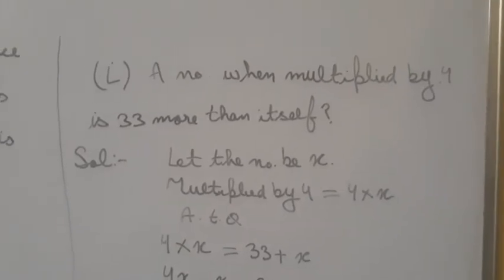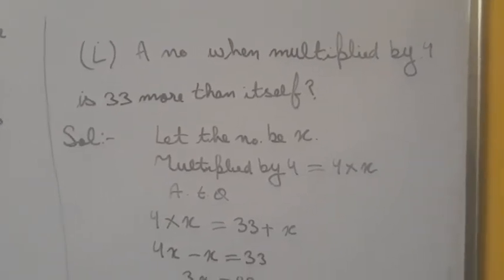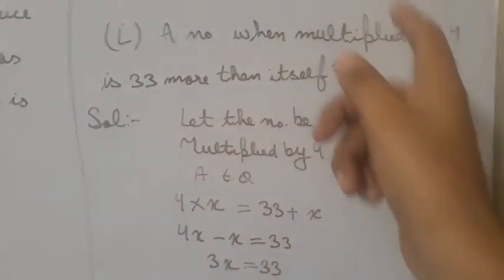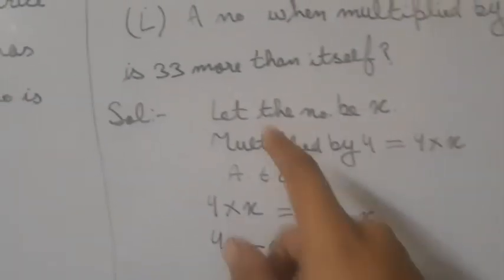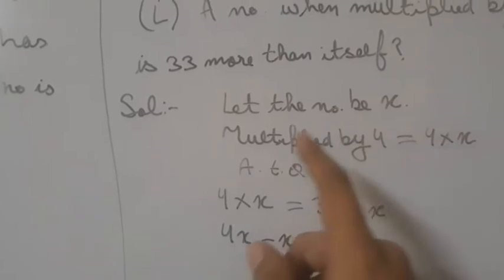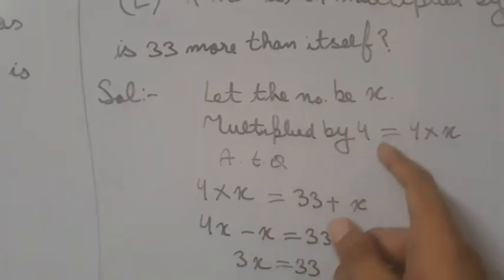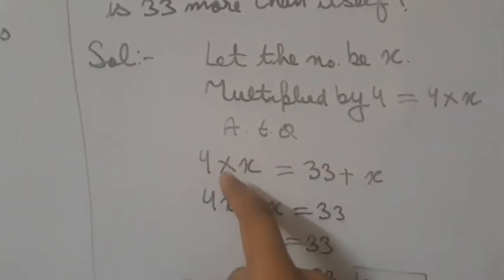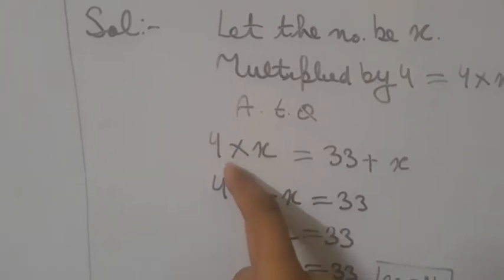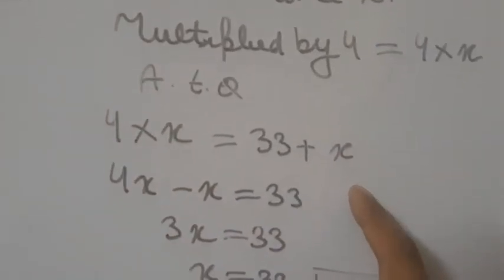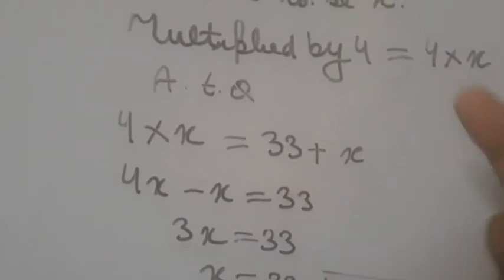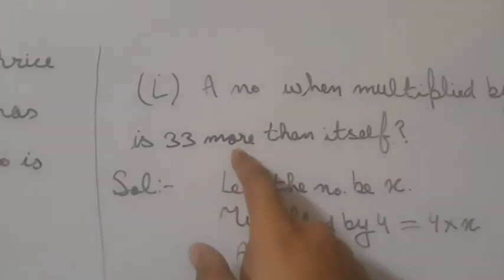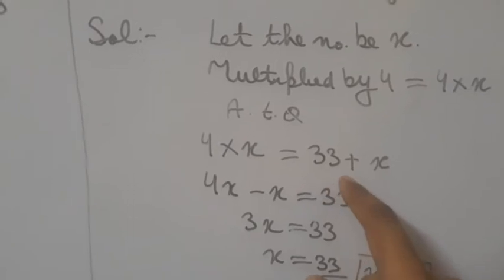Now part I: 'a number when multiplied by 4 is 33 more than itself'. Let the number be x. Multiplied by 4 gives 4x. According to the question, 4x is 33 more than the number itself — meaning 4x = x + 33.